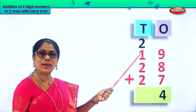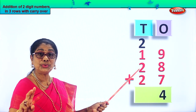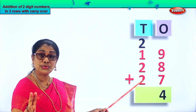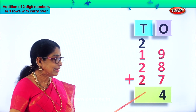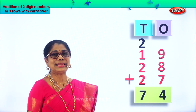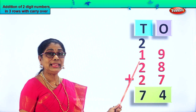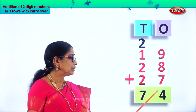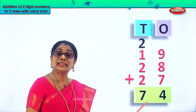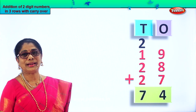What is two plus one? Three. Three plus two: four, five. Five plus two: six, seven. So we have seven tens. Nineteen plus twenty-eight plus twenty-seven gives you the answer seventy-four — that is seven tens and four ones.